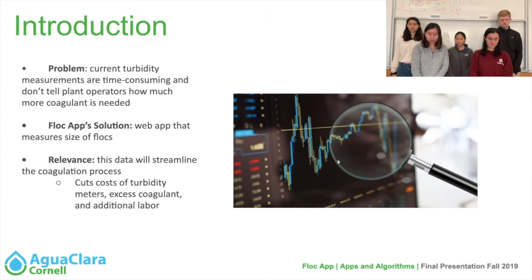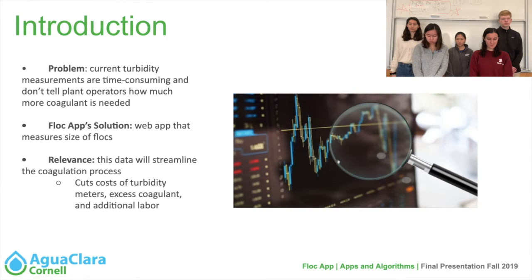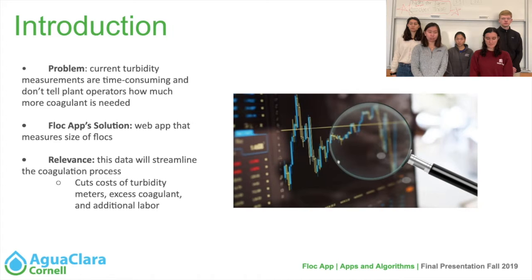FlockApp is designing an app that will expedite the feedback cycle on the coagulation process. We are creating a web application that will count and size the flocks, and using the data from our scripts, the coagulation teams will have more accurate data within a faster time frame and can use that to adjust the coagulant levels. The solution will save time and cost for the plants, and this web application will work offline to ensure that plant operators can access the data even if they don't have Wi-Fi.